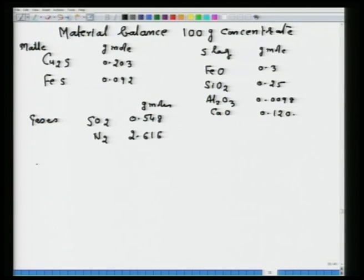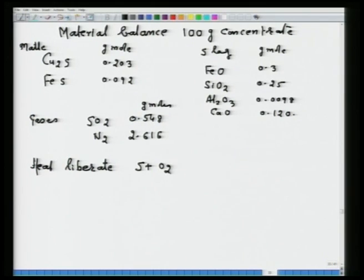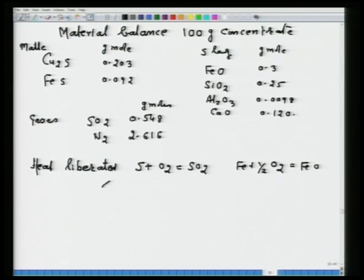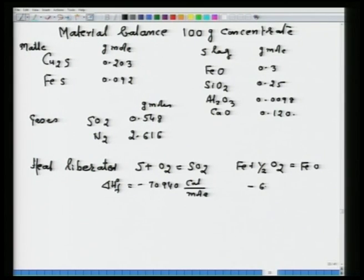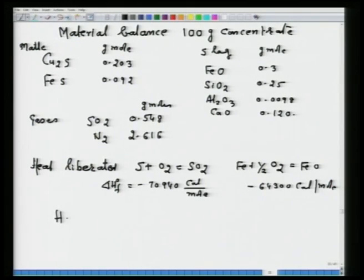Now we perform heat balance. Heat is liberated by two reactions: S + O₂ → SO₂, with ΔH°f = −70,940 cal/mol; and Fe + ½O₂ → FeO, with ΔH°f = −64,300 cal/mol. Using the moles of SO₂ and FeO formed, total heat liberated = 58,196 calories per 100 g concentrate.